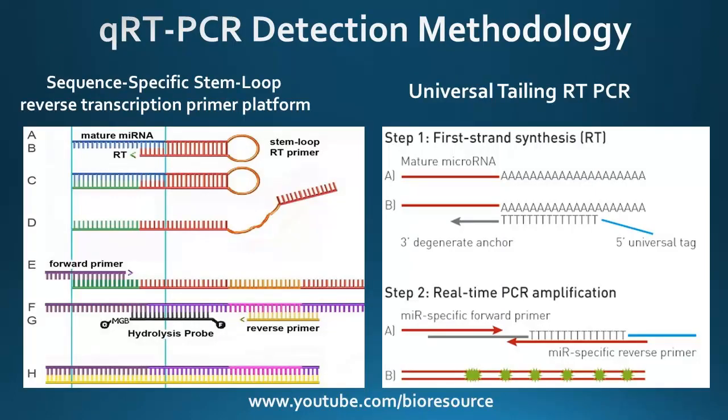In the sequence-specific stem-loop reverse transcription primer platform, the stem-loop RT primer binds to the mature miRNA. Once binding occurs, the loop structure opens up and both the forward and reverse primers can bind to the extended region. Using a hydrolysis probe, this can be detected in the PCR. Modified nucleotides such as LNA can be used to improve stability and increase the Tm of the primers.